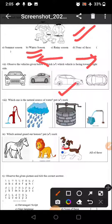Which one is the natural source of water? Rain is the natural source of water. Which animal guards our house? Dog guards our house.